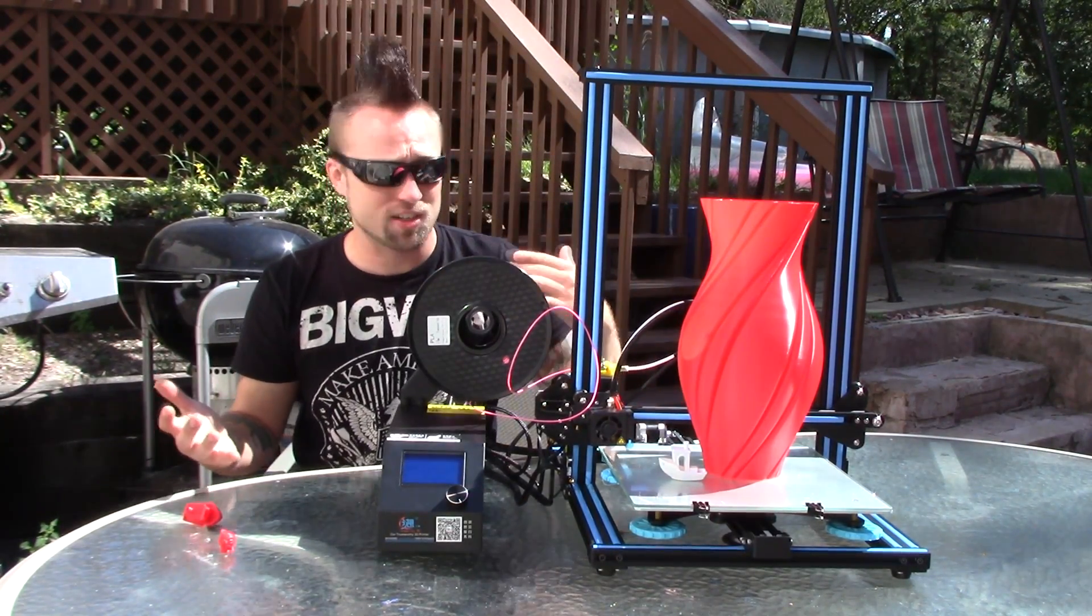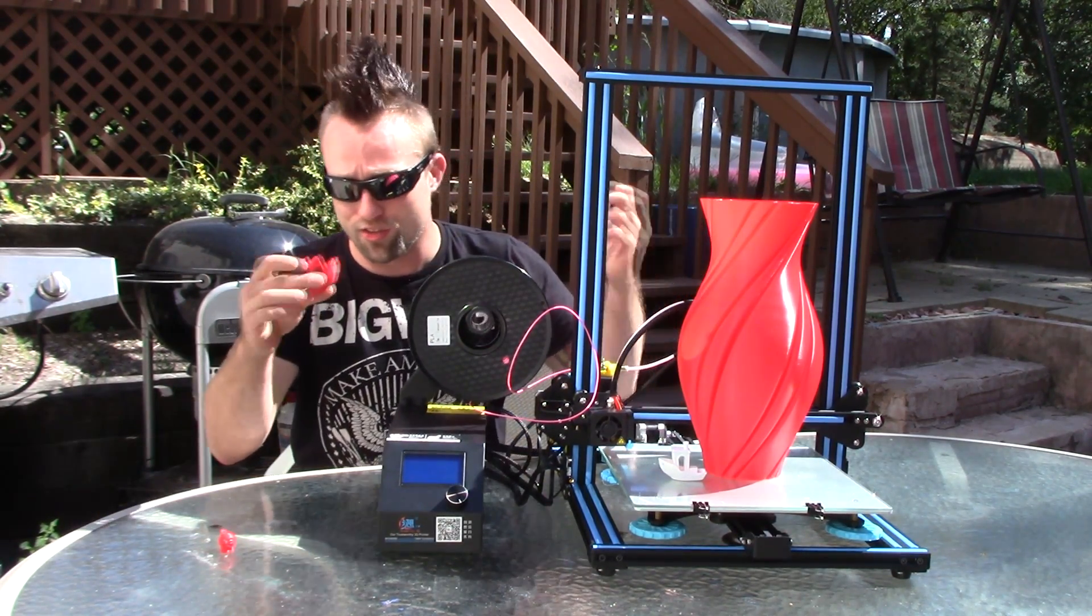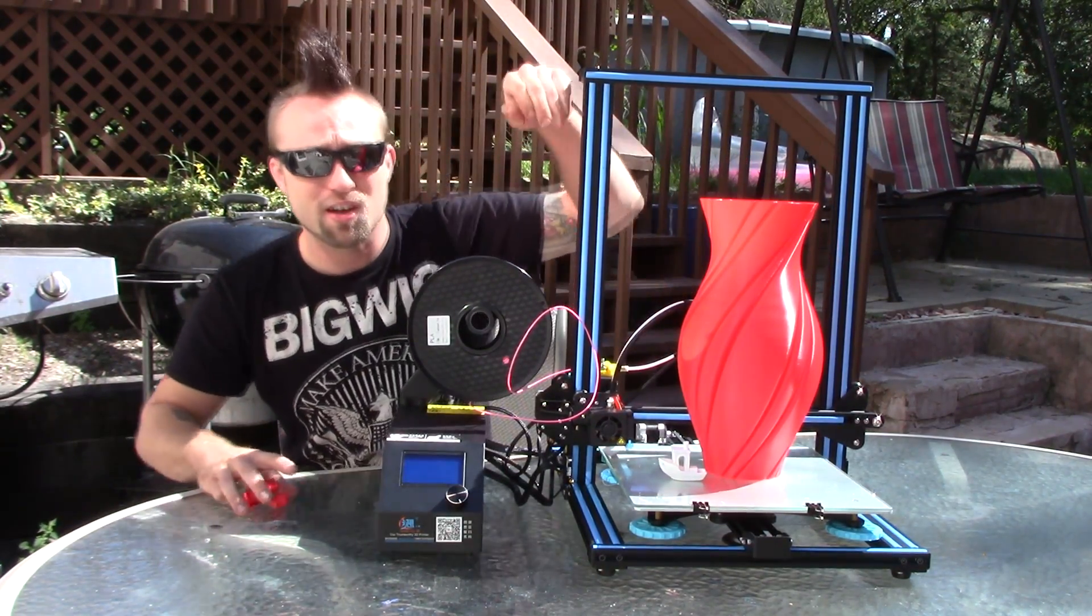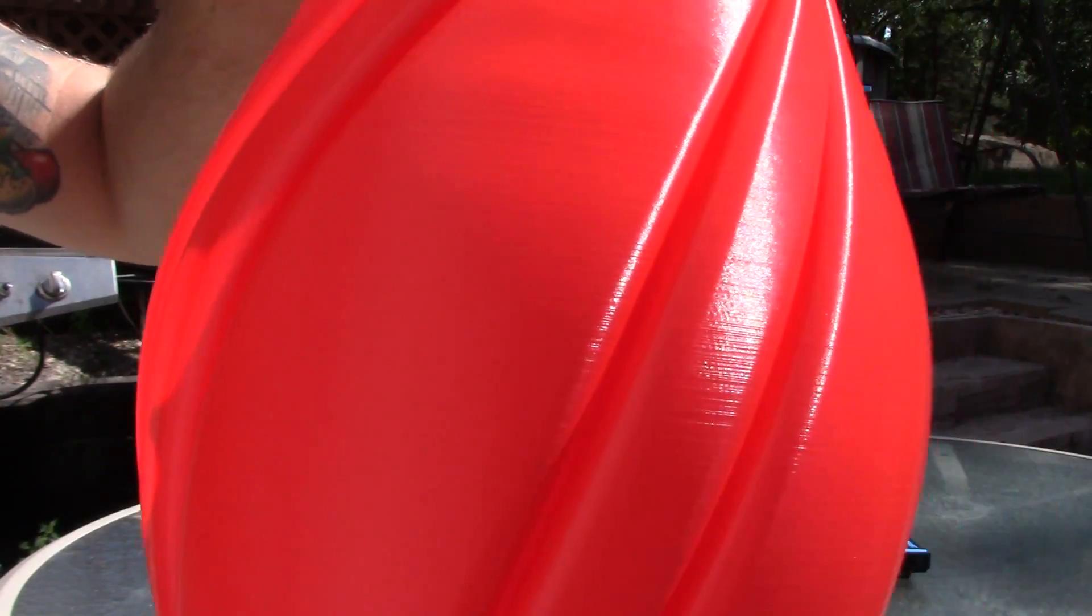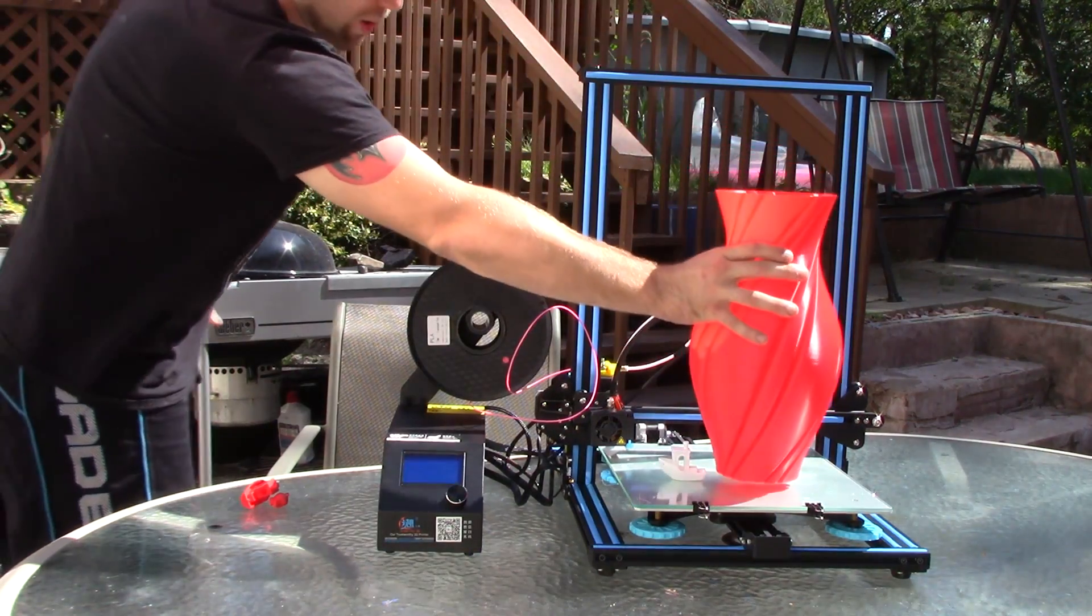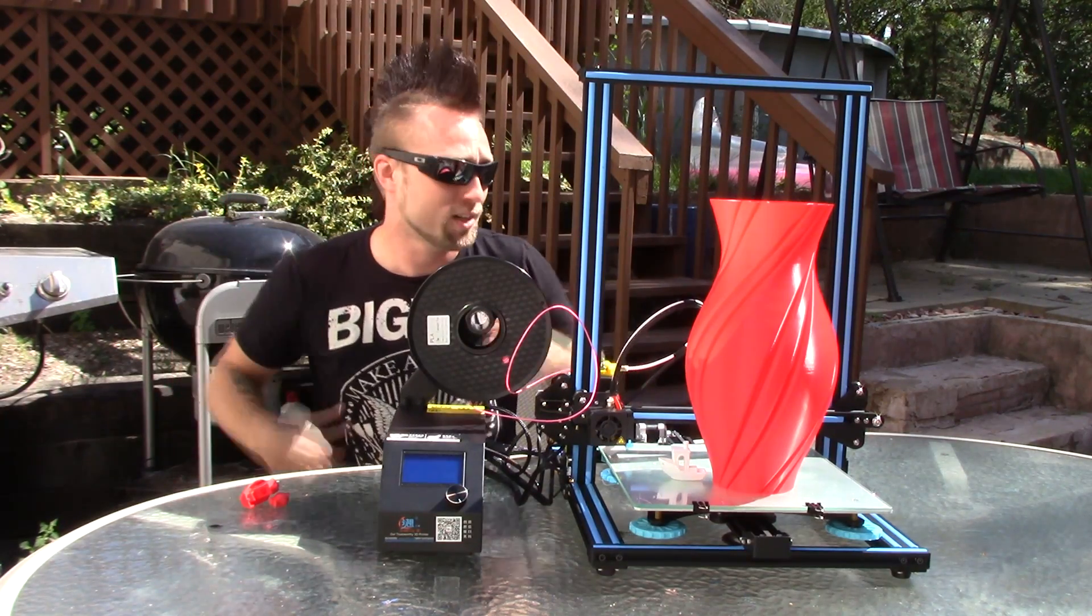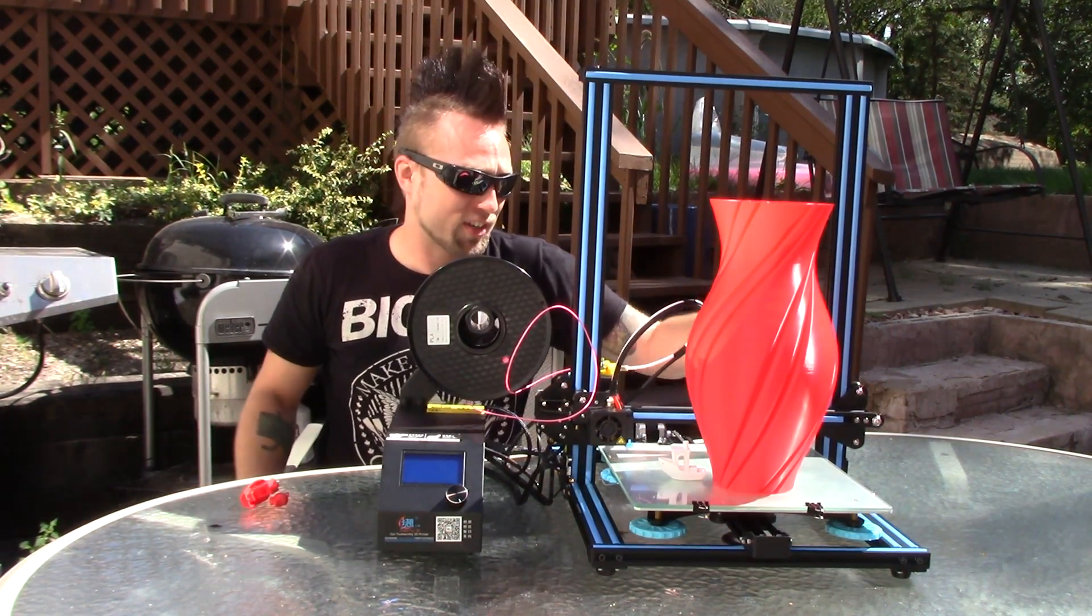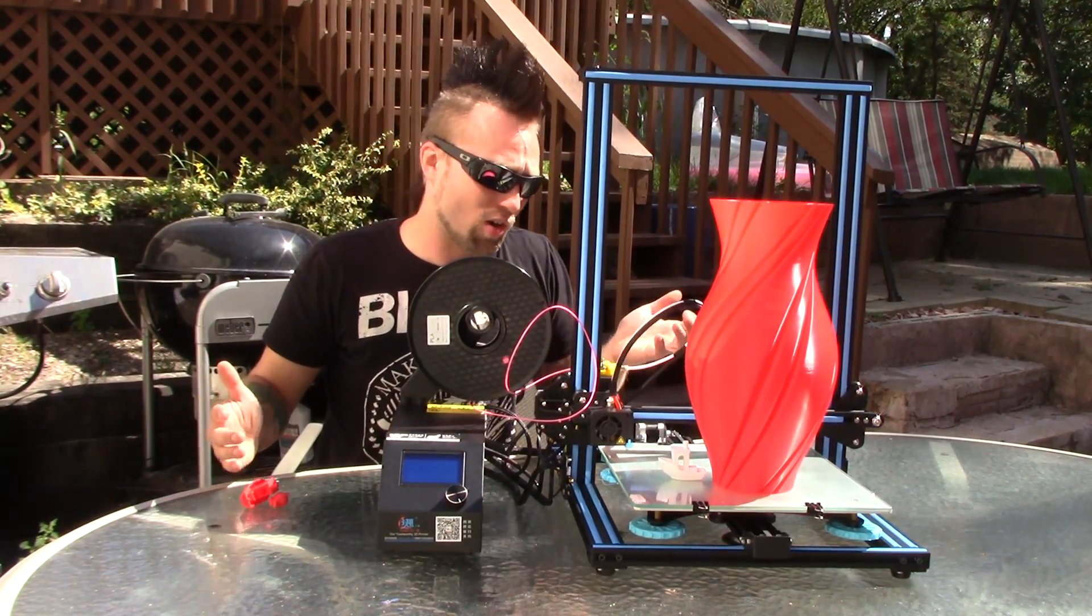Alright guys, so final thoughts on the CR-10. This thing is freaking awesome. It can print little things like this, this benchy, this Marvin, or it can print giant things like this vase. I mean like take a look at this again in the sunlight. Like it is perfect, like you can't see any of the layers. It is literally perfect. This giant build volume, I'm going to be, my brother wants me to make him a Doom guy helmet for Halloween so I'm going to have to do that, but yeah this thing can handle it no problem. You want to print a stormtrooper helmet, whatever, freaking awesome.